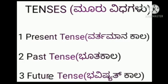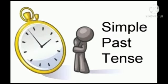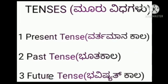Second is past tense. Past tense refers to actions that have already happened — that is simple past tense. And the third one is future tense.